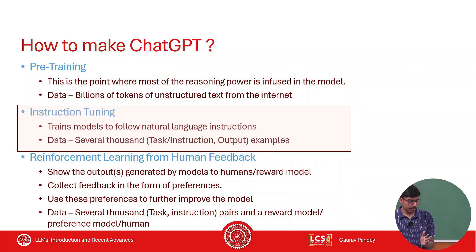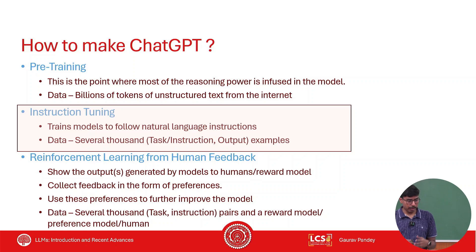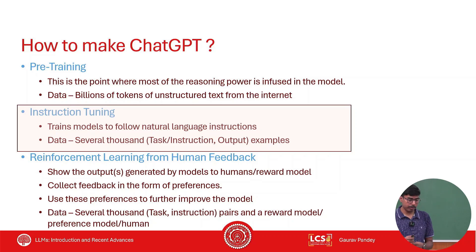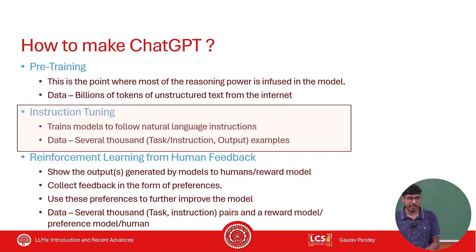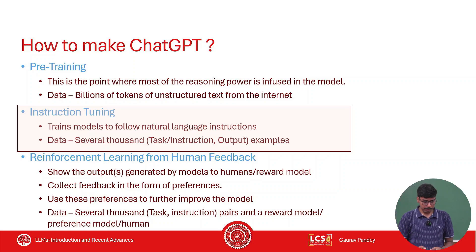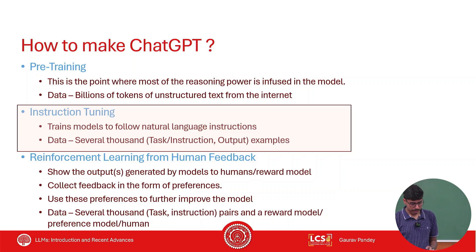Instruction tuning is the phase where you actually want to modify or transform your pre-trained model to make it follow natural language instructions. As we saw in the last class, pre-trained models may not follow natural language instructions. You might give them an instruction and they might give you a new instruction instead of an answer. They might have any weird behavior that they saw during their training data. So you want to add a phase where the model actually starts following instructions.